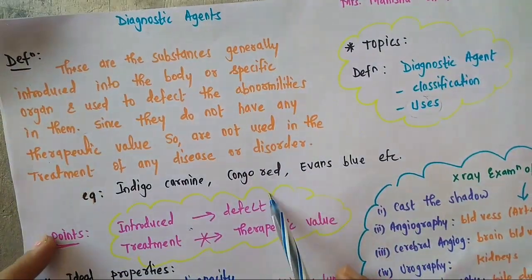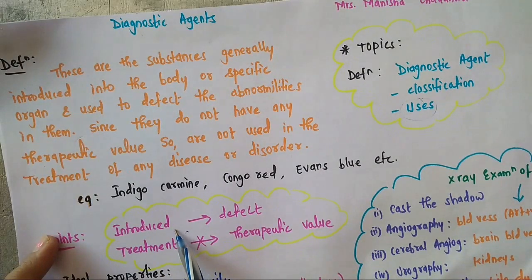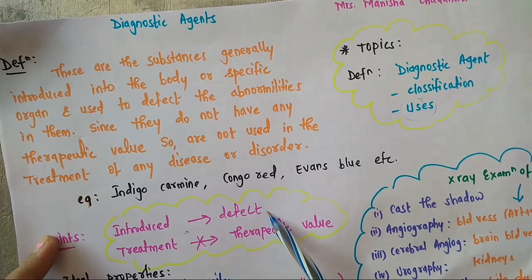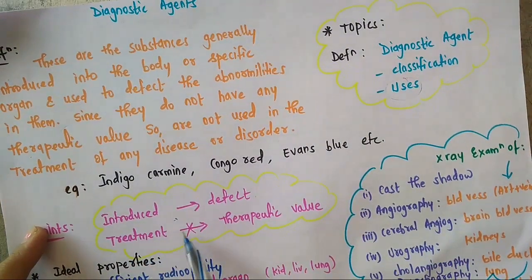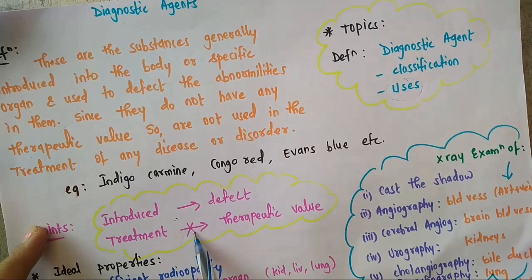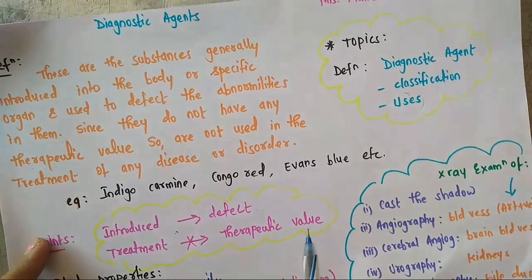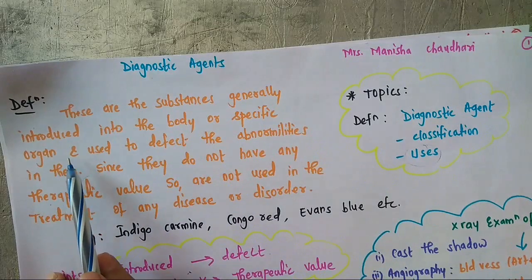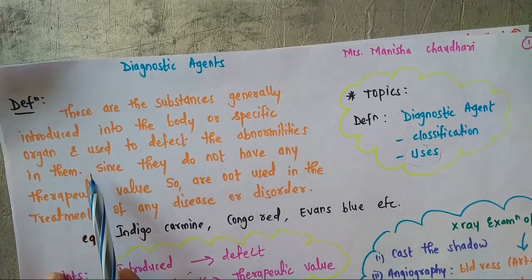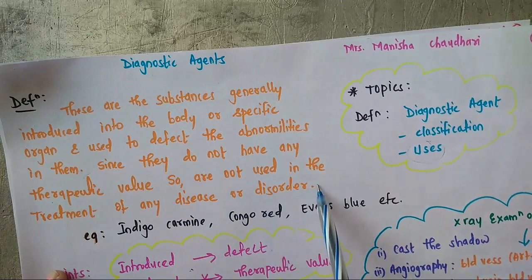What are the key points from the definition? First is its use: they are introduced into the body and then used to detect the abnormalities in the organ or tissues. Second, they are not used in the treatment of any disease or disorder since they do not have any therapeutic value. So the definition is: these are the substances which are generally introduced into the body or any specific organ and used to detect the abnormalities in them.